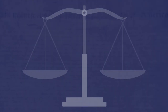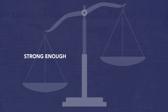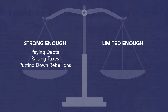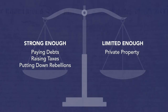The founders resolved to create a new government strong enough to achieve common purposes — like paying debts, raising taxes, and putting down rebellions. At the same time, the government had to be restrained enough not to threaten individual liberty — in particular, the rights of private property as well as the unalienable rights of speech and conscience. These were the main factors that led the founders to call the convention.